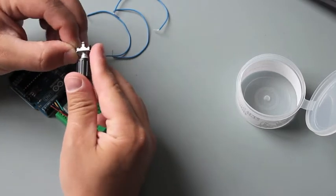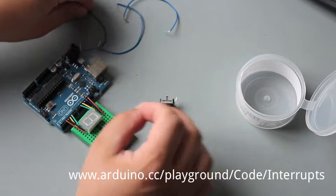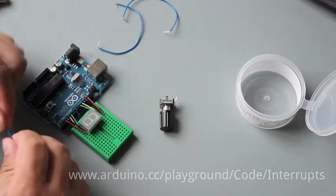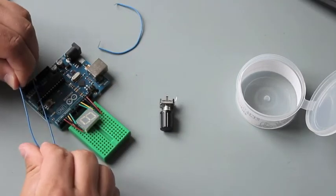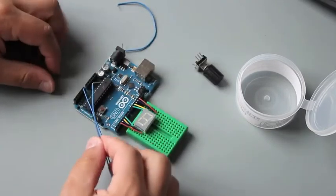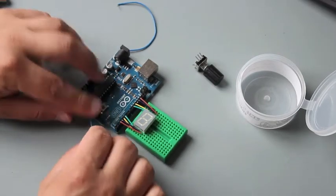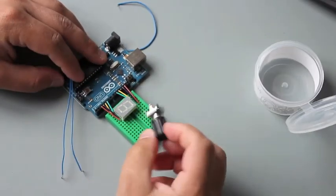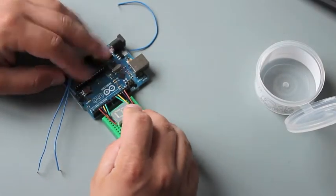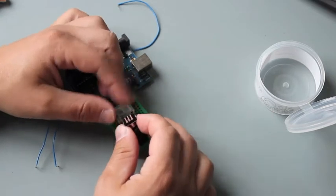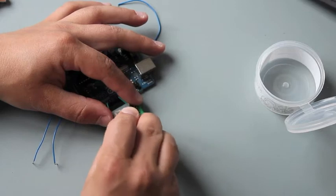This is our rotary encoder. And it uses the interrupts from the Arduino, which are here on the analog pin 0 and 1. So I place the encoder somewhere here, so that the holding clamps are in the gap on this mini breadboard.